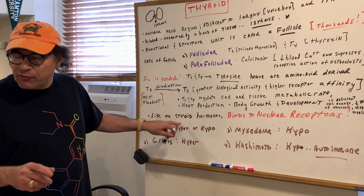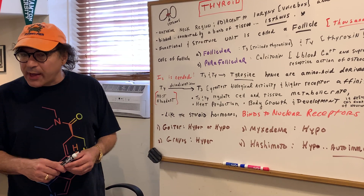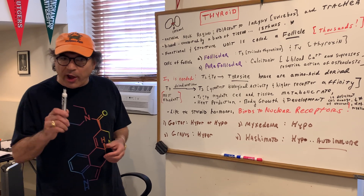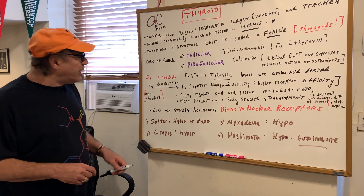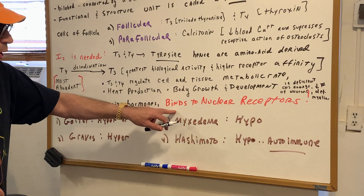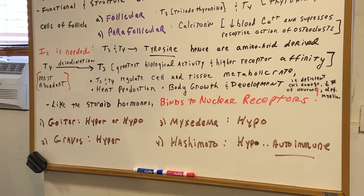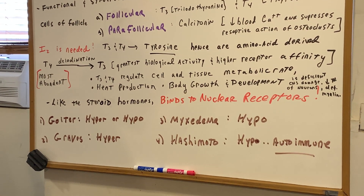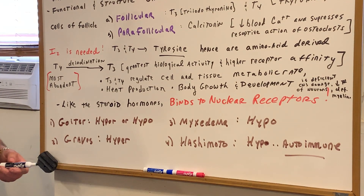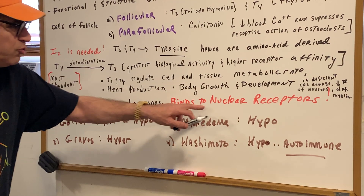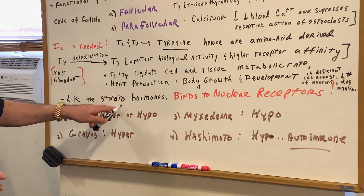Like steroids, which bind to nuclear receptors, thyroid hormones — even though they are amino acid derived — also bind to nuclear receptors. Normally we think of cell surface receptors for non-steroid hormones, but thyroid hormone is a nuclear receptor hormone, just like the steroids.